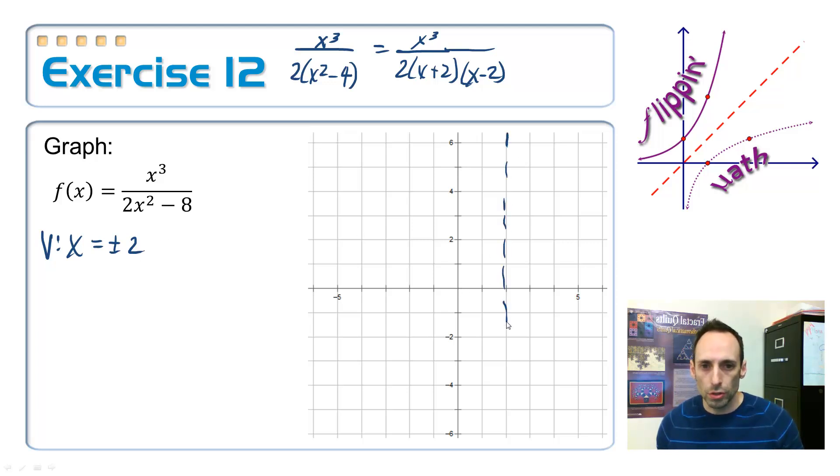And the other side. There we go. And how about a horizontal? Nope. Don't have one. I've got a cube over a squared, which means I have none. And I'm going to have to divide in order to find my slant asymptote. And I have to do regular, good old-fashioned long division on this one. So, 2x squared minus 8. I'm going to divide that into only x cubed.